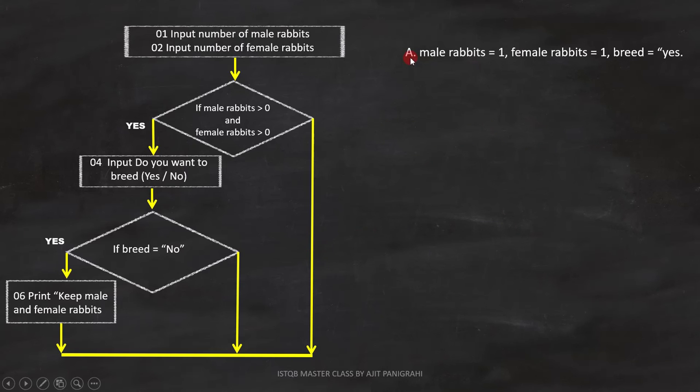Option A is male rabbit equals 1, female rabbits equal 1, breed equals yes.